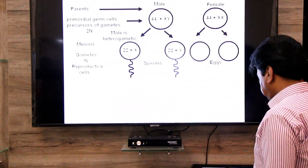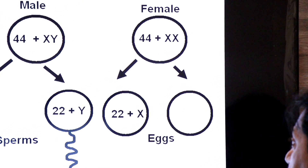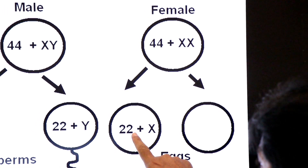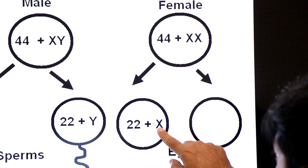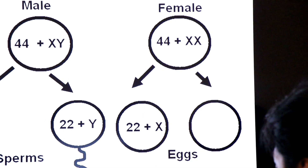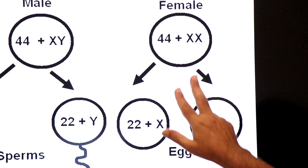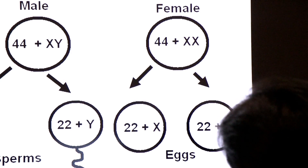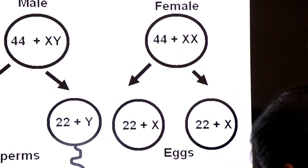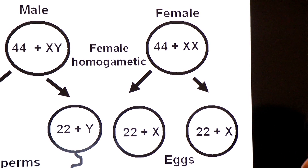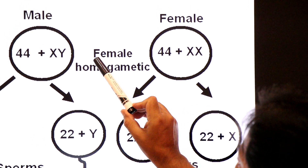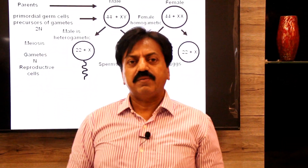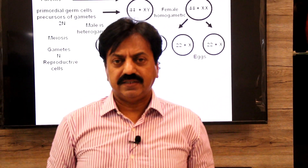Now we go to the female. These 44 autosomes split into 22 autosomes, and the two X sex chromosomes are distributed so that each egg gets 22 plus X. This combination is also 22 plus X, so the female has only one type of gamete. That is why the human female is homogametic — homo means same, gamos means gametes, producing the same type of gametes.